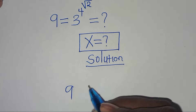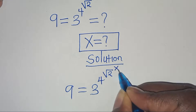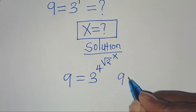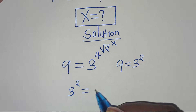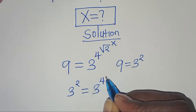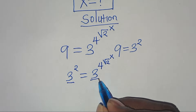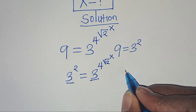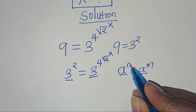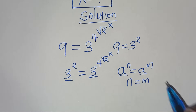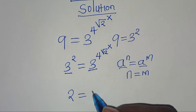We have 9 equal to 3 to the power of 4 to the power of square root of 2 to the power of x. We can express 9 as 3 to the power of 2, giving us 3² = 3^(4^(√2^x)). Since the bases are common, we apply the property: if a^n = a^m, then n = m. This implies 2 = 4 to the power of square root of 2 to the power of x.